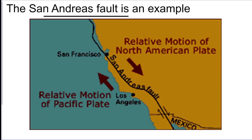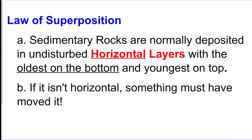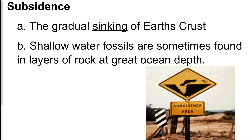The last boundary is transform — plates just slide past each other and sort of crunch. The San Andreas Fault is the best transform boundary example. Faults are breaks in the rock created when plates move, and they give us earthquakes. Law of superposition: the oldest rock layer is always on the bottom. Displaced fossils — we've found rocks with fish in them on top of mountains, meaning the Earth was uplifted there. Subsidence means shallow water fossils found at deep ocean floors, meaning that area sank.